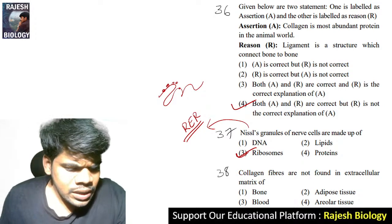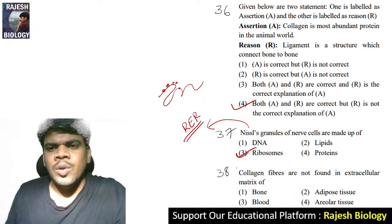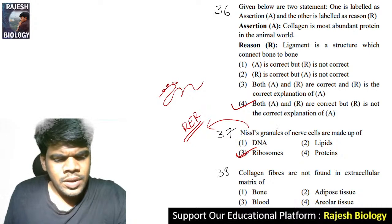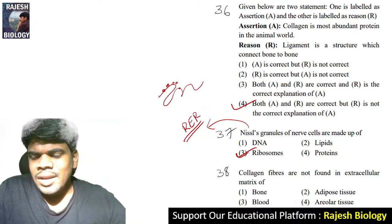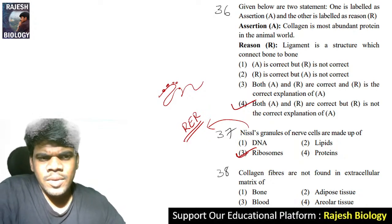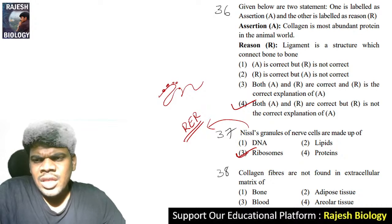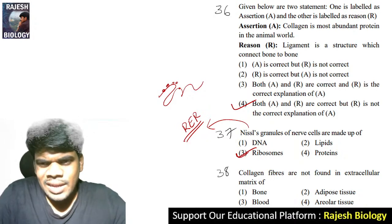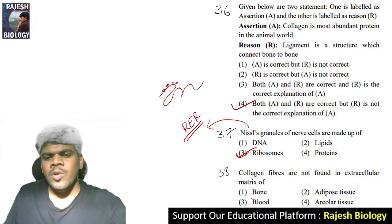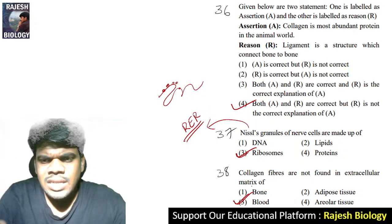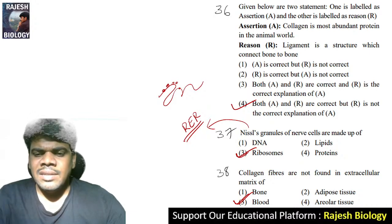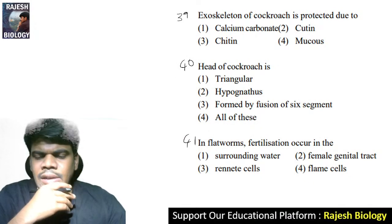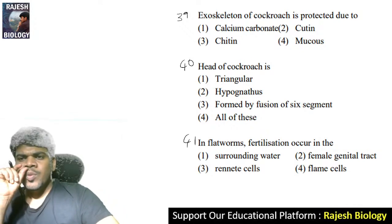Collagen fibers — A is correct, R is not correct since ligament connecting bone to bone is a correct fact but not the explanation. Welcome Shahid! Thirty-eighth question: collagen fibers are not found in the extracellular matrix of blood — blood is a fiber-free liquid matrix, there are no fibers in blood. Thirty-ninth question: the exoskeleton of cockroach is protected due to chitin.